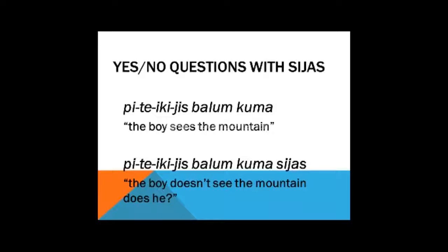And the third one, sias. Again, the statement: pita yika yisbalum kuma, the boy sees the mountain. Let's stick sias on the end: Pita yika yisbalum kuma sias. Again, you could translate this as: Does the boy see the mountain? But when you say sias, you suspect the boy doesn't see the mountain, so it's better translated into English as something like: The boy doesn't see the mountain, does he?